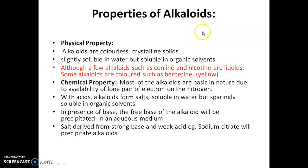What are the properties of alkaloids? Alkaloids are colorless crystalline solids. They are slightly soluble in water; however, caffeine is totally soluble in water but soluble in organic solvents. A few alkaloids like conine and nicotine are not solid — they are liquid in nature. Some alkaloids are colored, like berberine which is yellow. Most alkaloids are basic in nature due to the availability of the lone pair of electrons on the nitrogen. With acids, alkaloids form salts which are soluble in water but sparingly soluble in organic solvents.